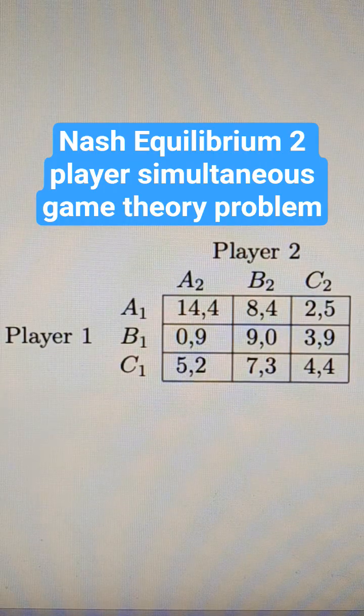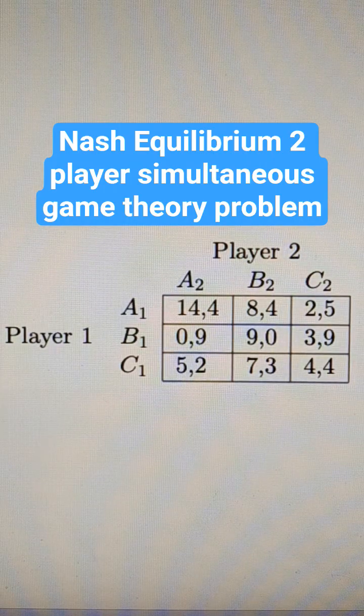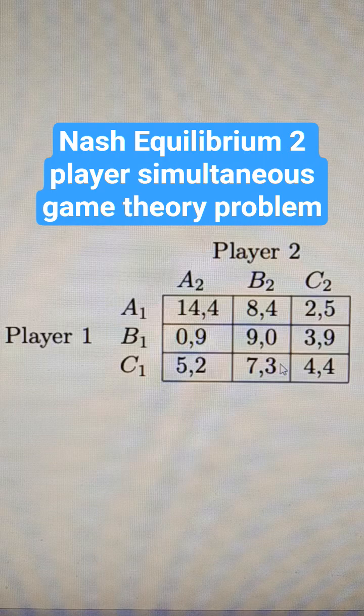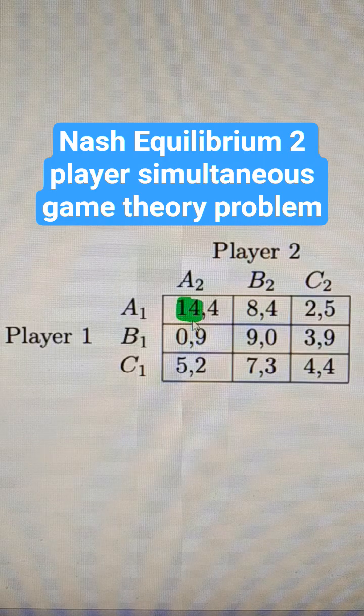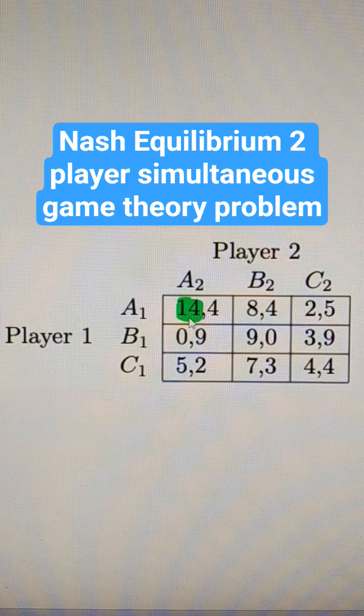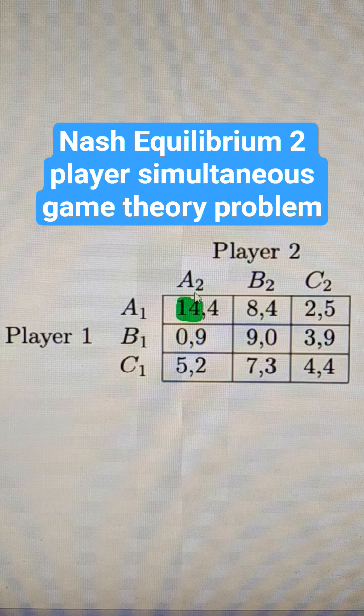Let's see how quickly we can solve this two-player simultaneous game theory problem using this payoff matrix. So, player 1's best response would be to produce A1 when player 2 goes A2.